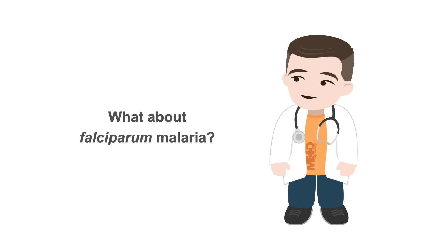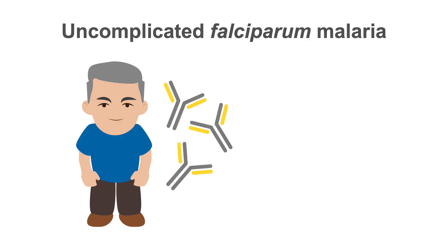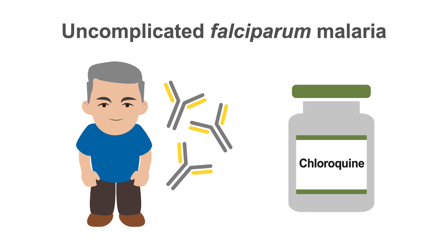What about falciparum malaria? Milder cases may occur in individuals who were previously infected and thus have antibodies to the disease. For uncomplicated Plasmodium falciparum infections acquired in areas without chloroquine-resistant strains — which include Central America west of the Panama Canal, Haiti, and the Dominican Republic — patients can also be treated with oral chloroquine.